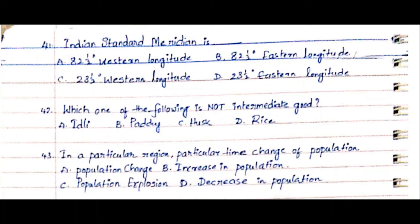Question 42: Which one of the following is not an intermediate good? Option A. Idli, Option B. Paddy, Option C. Husk, Option D. Rice. The answer is Option A. Idli.